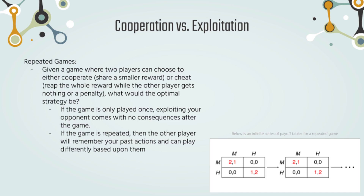If the game is only played once, exploiting your opponent makes more sense, as there is no actual strategy — just picking either to cheat or cooperate. Cheating will always reap a better reward, and cooperating can leave you vulnerable to getting exploited. However, if the game is repeated, the other player will remember and respond to your past actions, and these are how social strategies can develop.